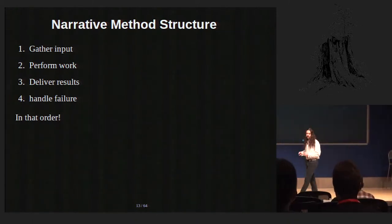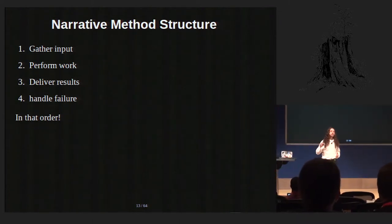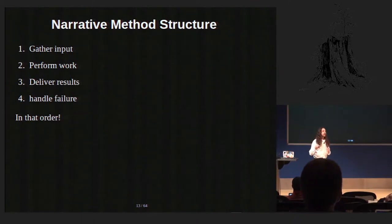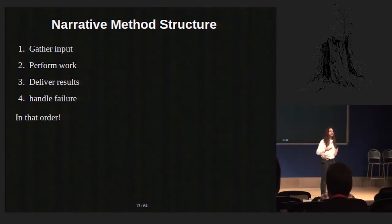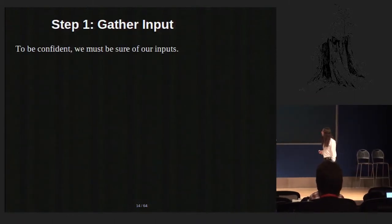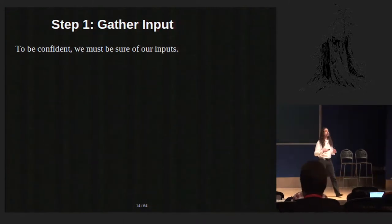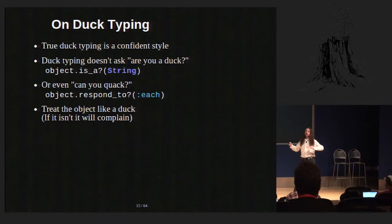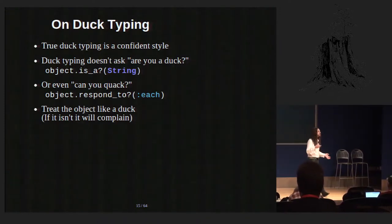The first step is input gathering. In order to have confident code, we need to be sure of our inputs. When you talk about input in Ruby, you have to talk about duck typing. Duck typing at its best is a very confident style of code construction. You don't ask objects about themselves. You don't ask, are you a duck? You just treat the object like a duck. If it is not, you assume that it will complain.